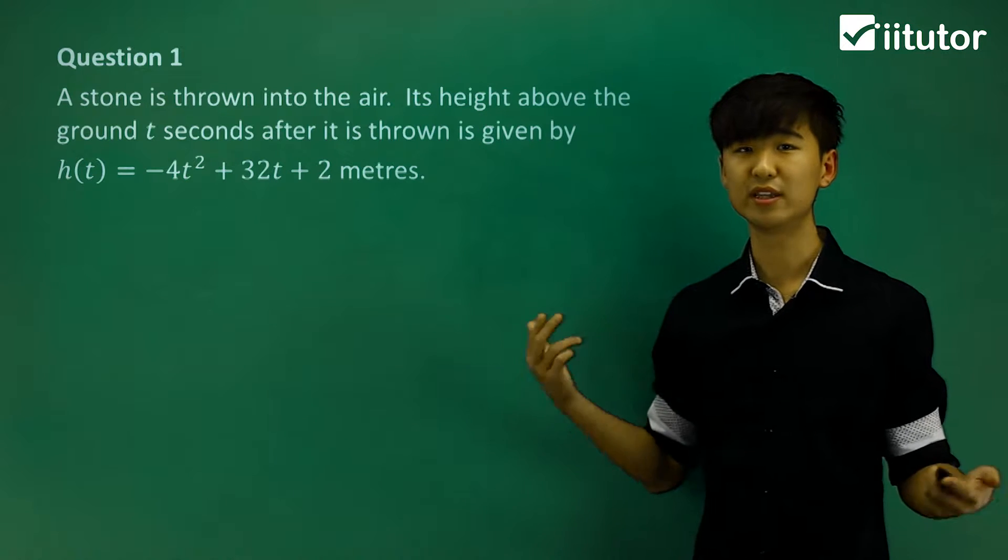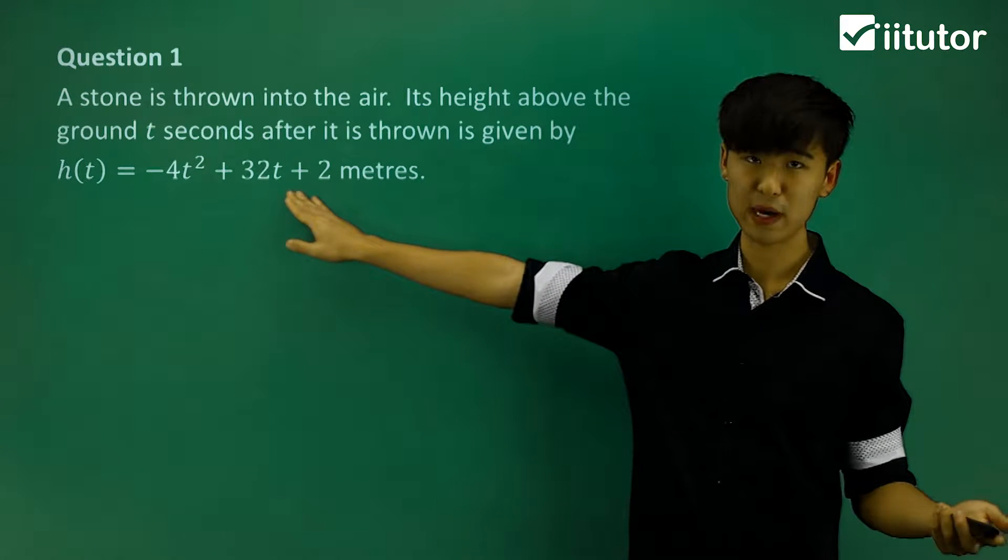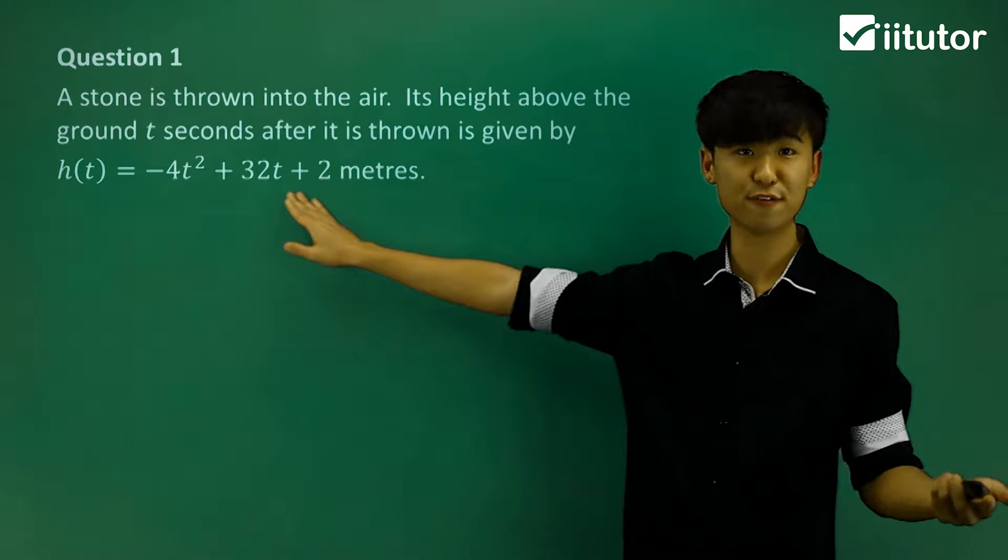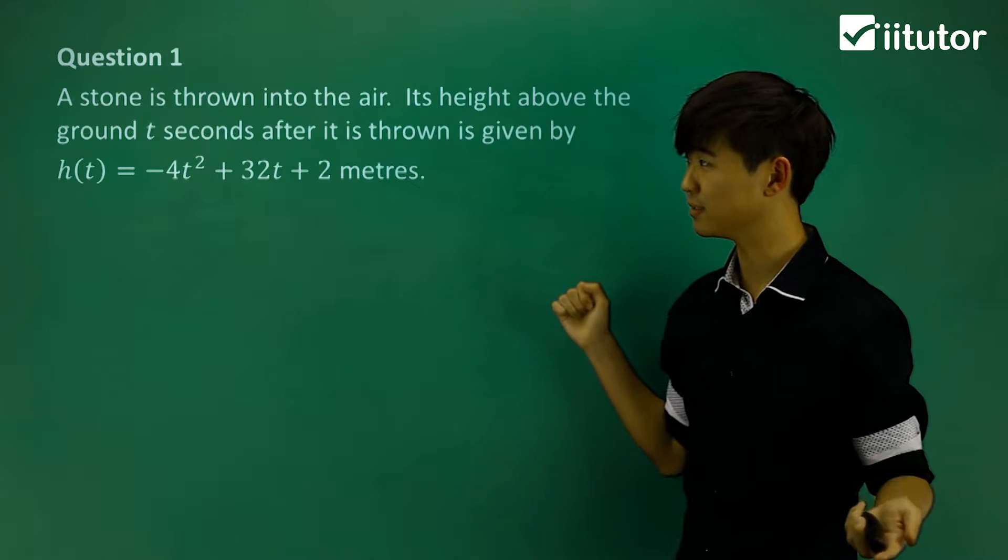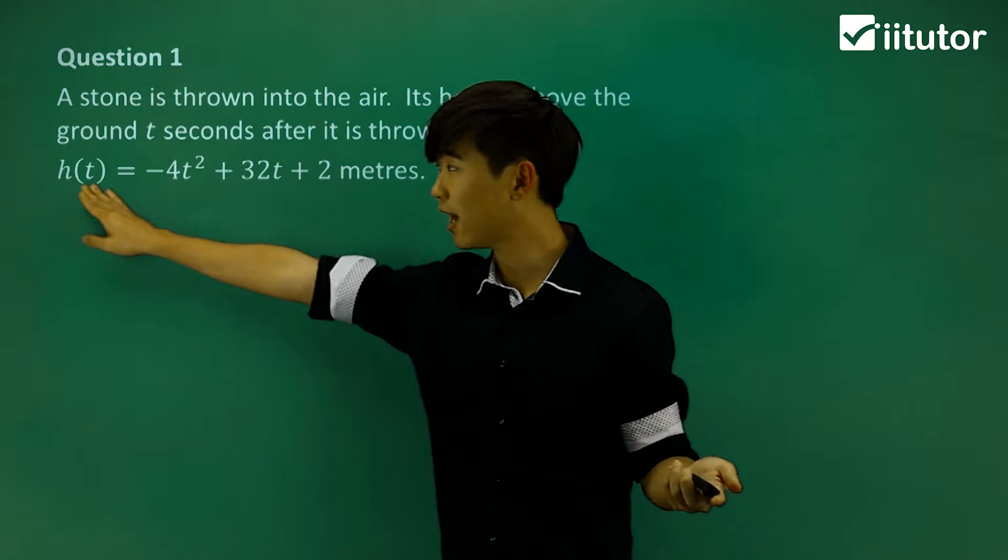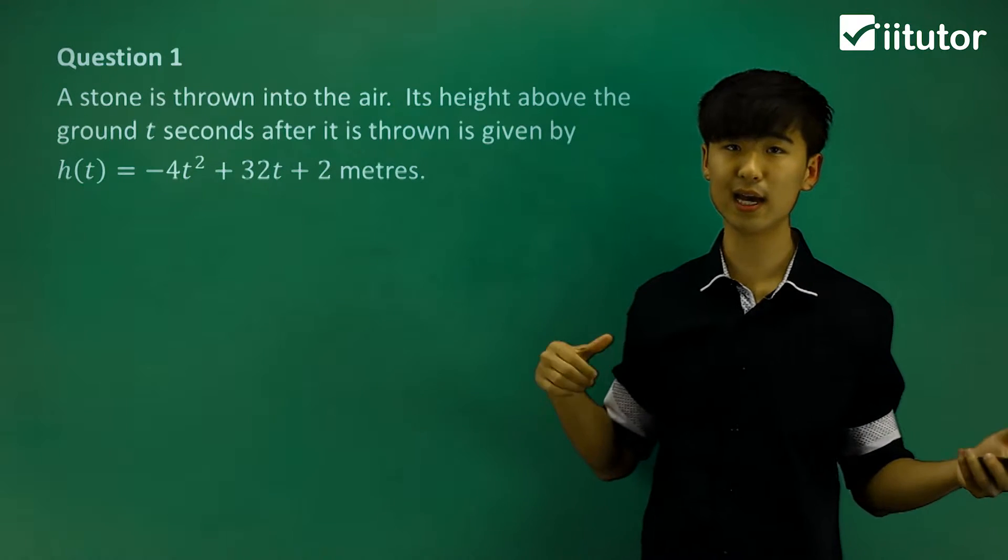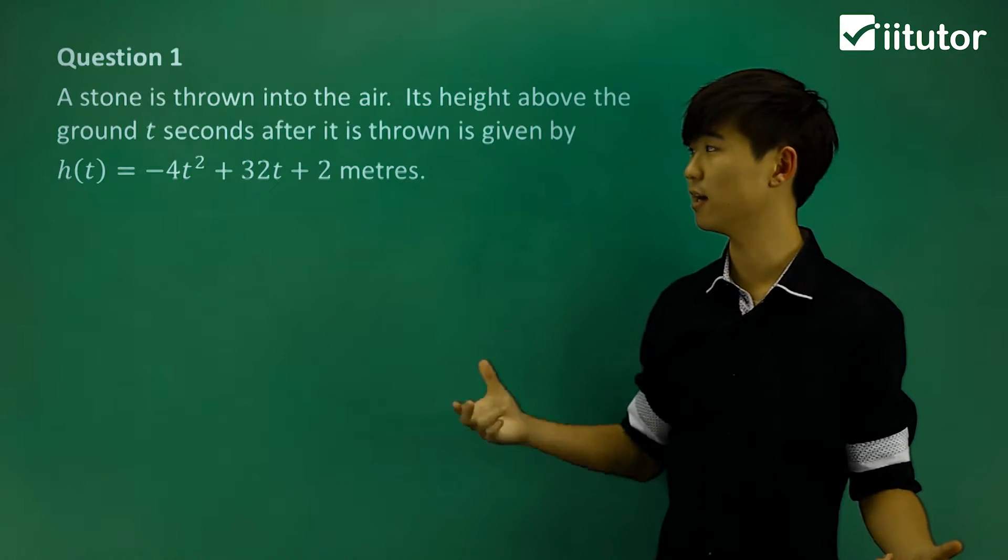h(t) = -4t² + 32t + 2 meters, where h represents the height and t represents the seconds after it has been thrown.